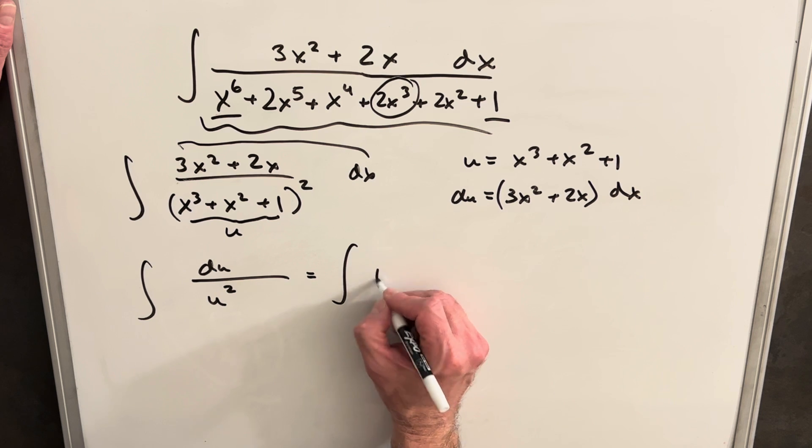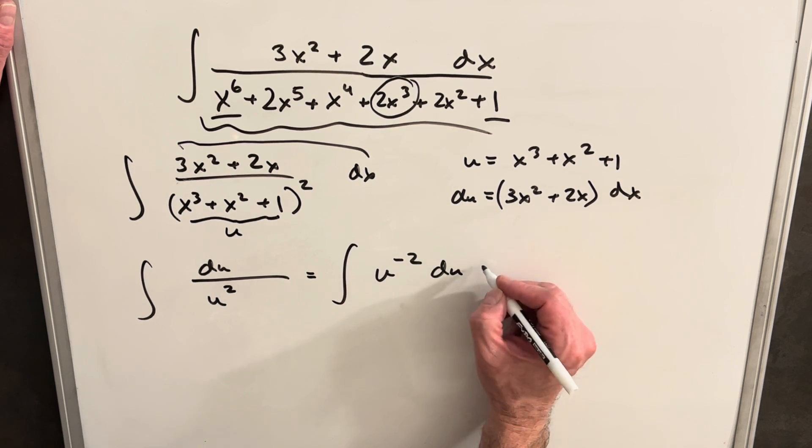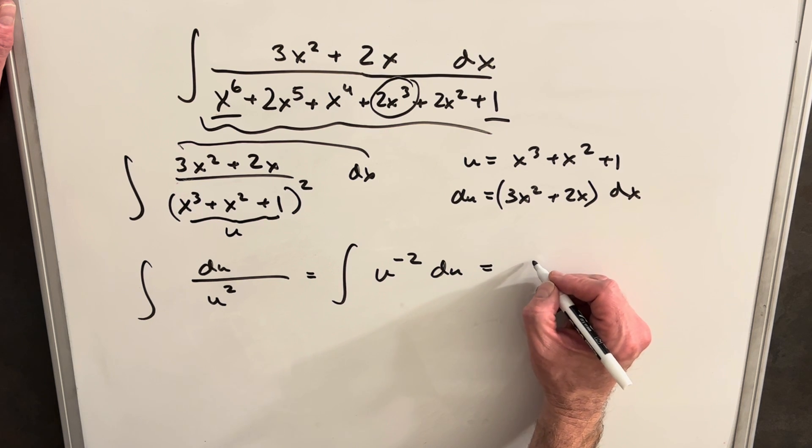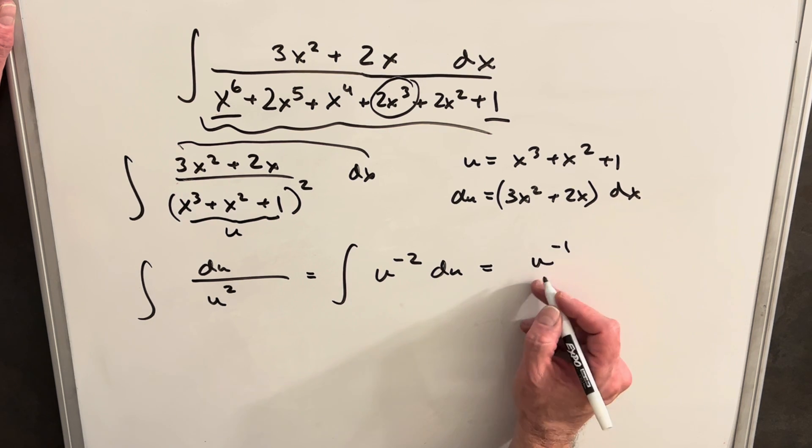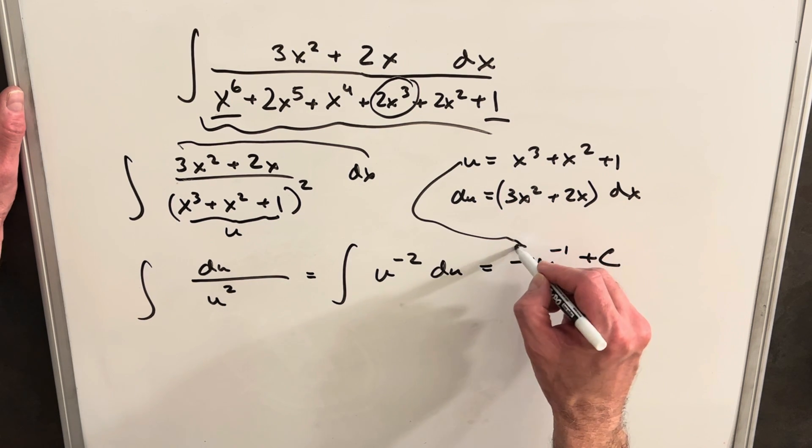That's actually going to be pretty easy to integrate. We'll write it like u to the minus 2 power du. Then integrating that, we're going to have u to the minus 1 over minus 1.